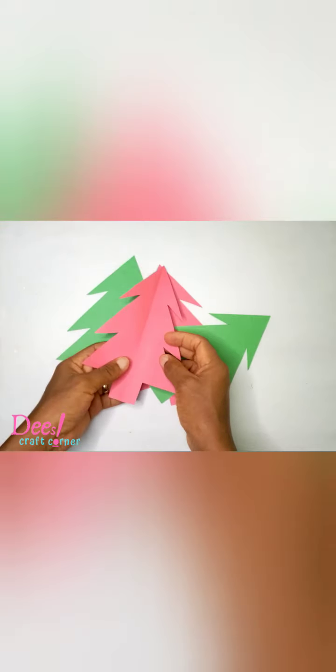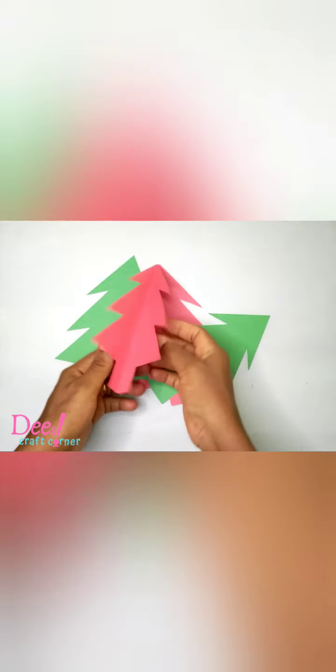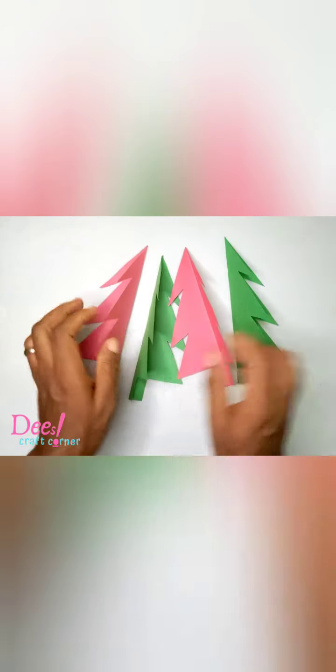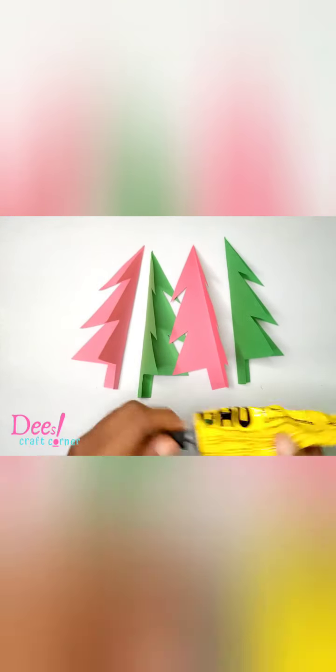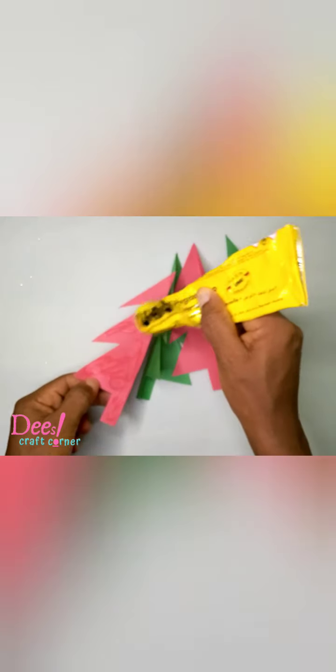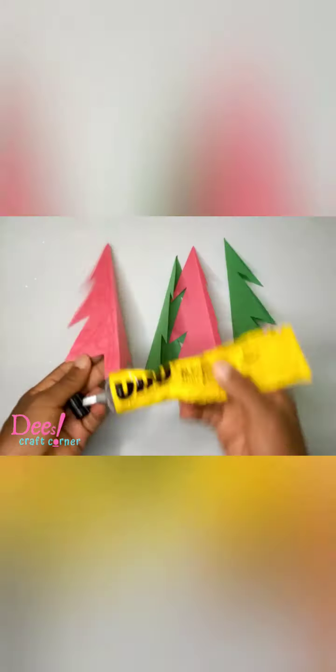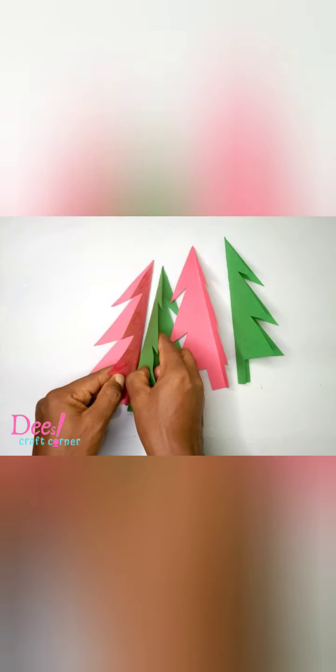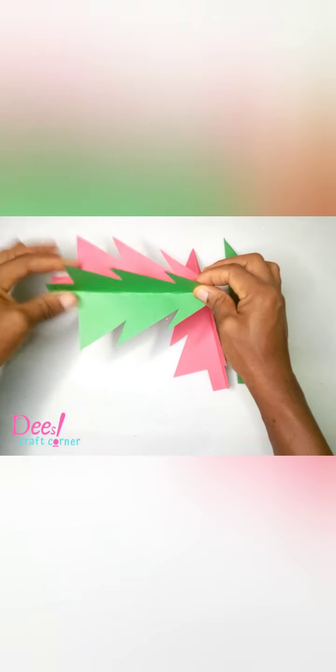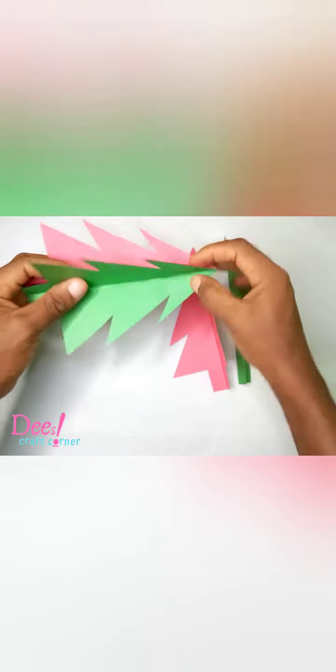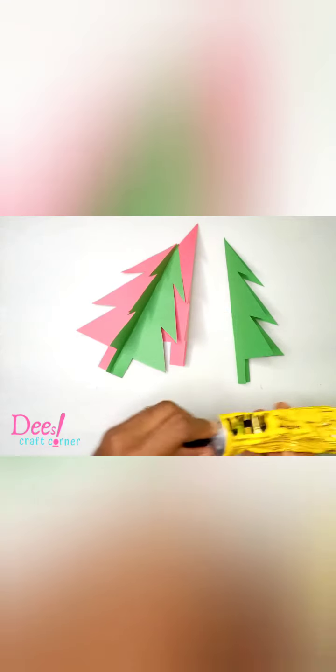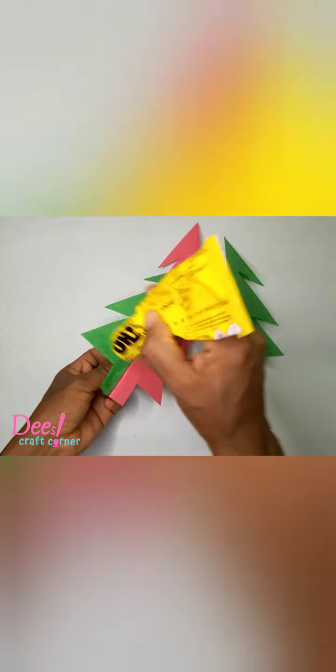You fold them into two. You have four of them, so we're going to glue them in the alternating colors. As you can see, I have green, red, green, and red. Don't worry, the edges are not exactly aligned. You can choose to trim them or ignore them, which is what I do anyway because it doesn't have to be perfect.